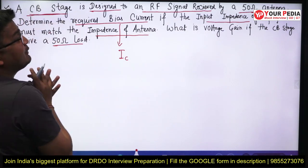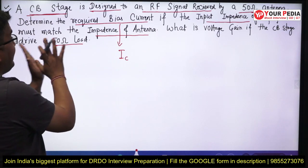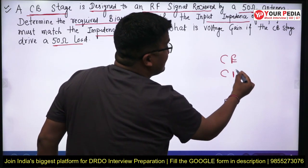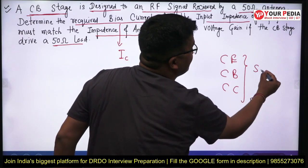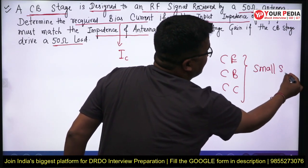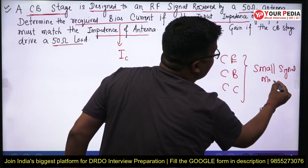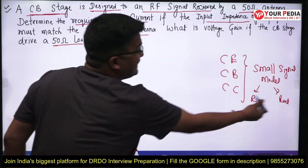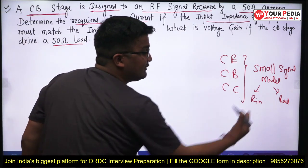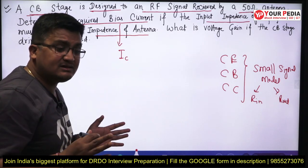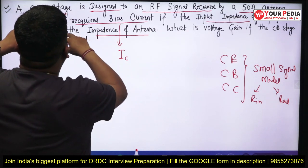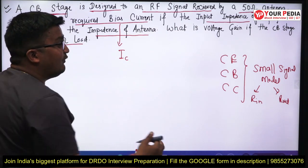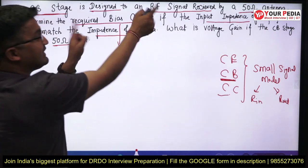For common emitter, common base, and common collector configurations, you need to make a small signal model. When you go for the small signal model, you calculate R_input and R_output. Students often ask whether the interview will ask them to calculate R_in and R_out — yes, this is one of the basic questions. But they integrate the concept: they say clearly, determine the required bias current if the input impedance of the amplifier must match the antenna impedance. If you know the input impedance of the common base amplifier, you can directly use that knowledge in this problem.